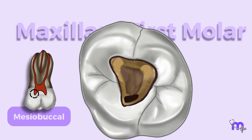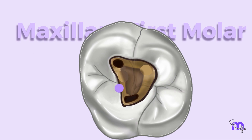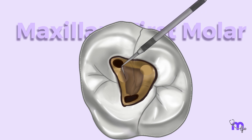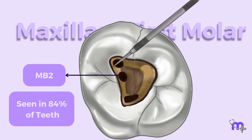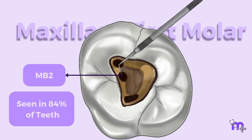The mesiobuccal pulp horn was present under the mesiobuccal cusp, elongated buccopalatally with a depression at the palatal end. Consequently, I located a fourth canal, MB2, after probing the tip of the DG-16 Explorer in a mesiobuccal-apical inclination.